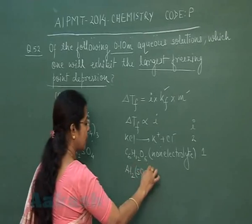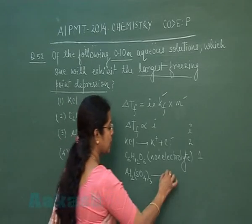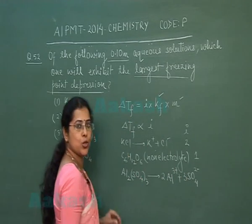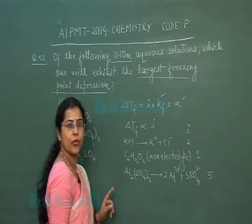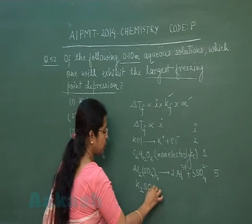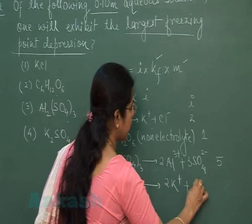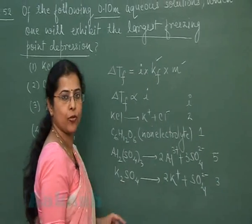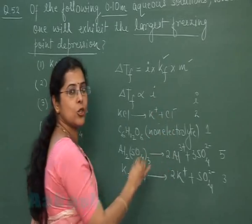The third option is aluminium sulfate, Al₂(SO₄)₃. Being a strong electrolyte, it produces 2 aluminium ions and 3 sulfate ions, so the total number of particles in solution is 5, giving a van't Hoff factor i of 5. The fourth option is K₂SO₄, which dissociates into 2 potassium ions and 1 sulfate ion, giving 3 total particles and a van't Hoff factor of 3.